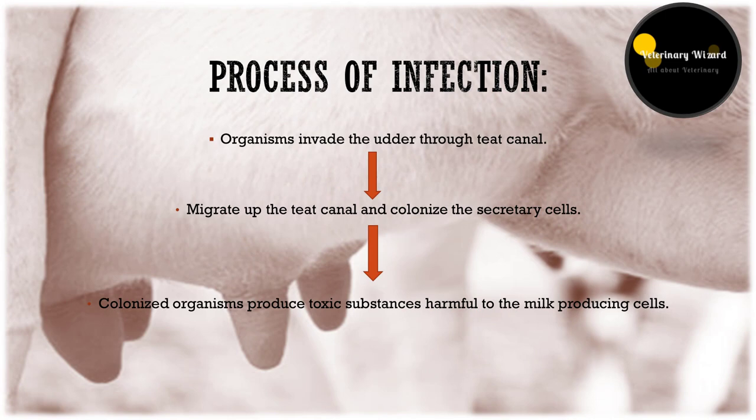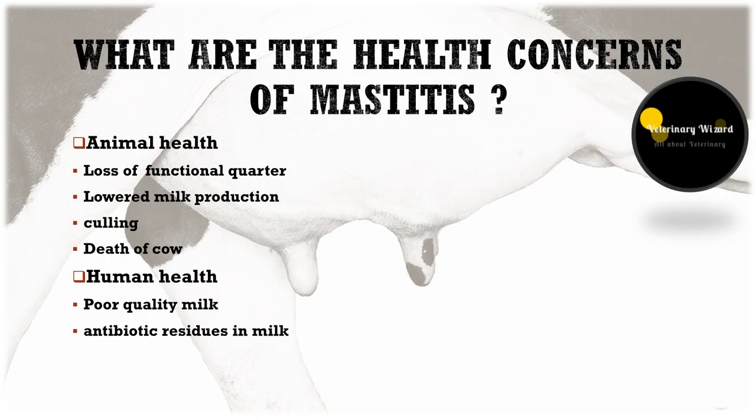Regarding the process of infection: organisms that cause mastitis get entry through the teat canal, then they migrate through the teat canal and colonize the secretory cells. The colonized organisms produce toxic substances that are harmful to milk-producing cells, leading to inflammation.